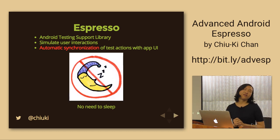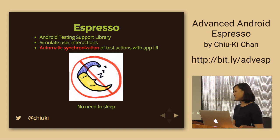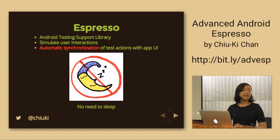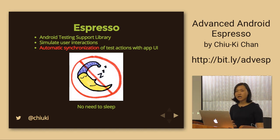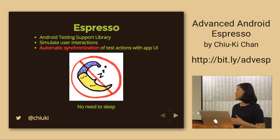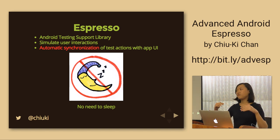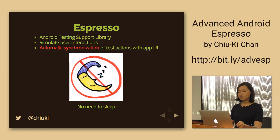With Espresso, the special thing is that it watches the UI queue and UI thread for you, making sure there's no UI event queued before it tries to click buttons or type. That's what synchronization means — it will wait until the app is ready before doing things to it. That's what makes it interesting.